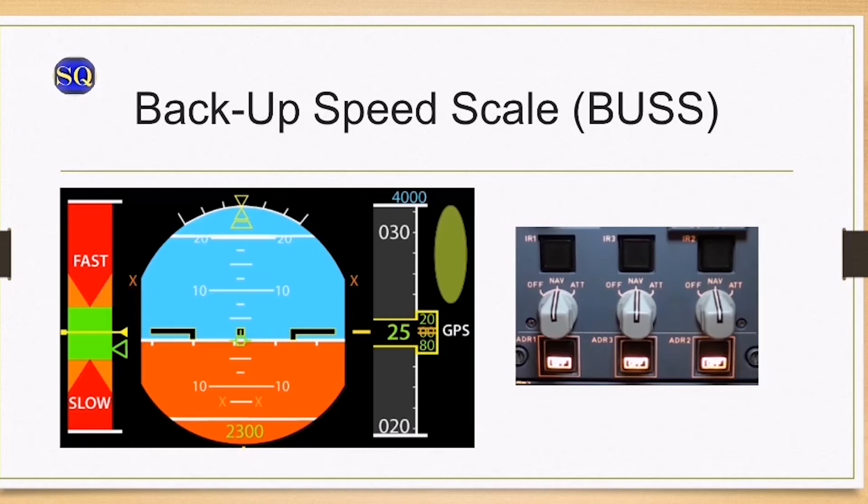When the ADRs are off, the PFD changes to the BUSS. The BUSS replaces the normal speed scale. It is based on the angle of attack information and enables the crew to safely fly the aircraft without any valid speed indication. The GPS altitude replaces the barometric altitude, but the last two digits are replaced by amber lines due to the GPS inaccuracy. The VIRT speed indication is unavailable, as shown on the green circle on the right of the PFD.